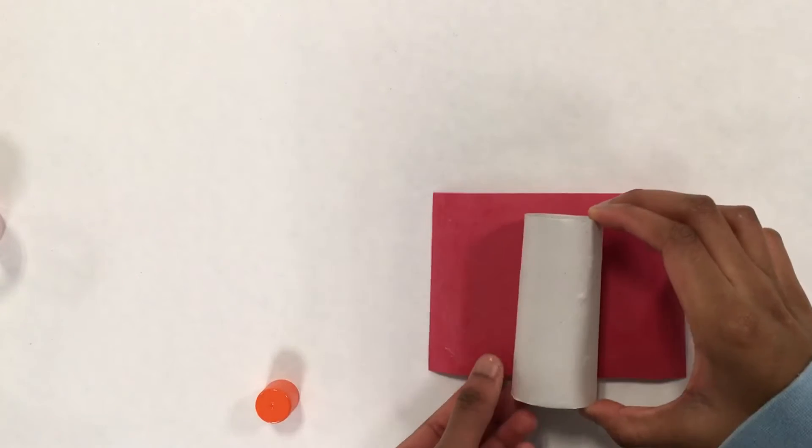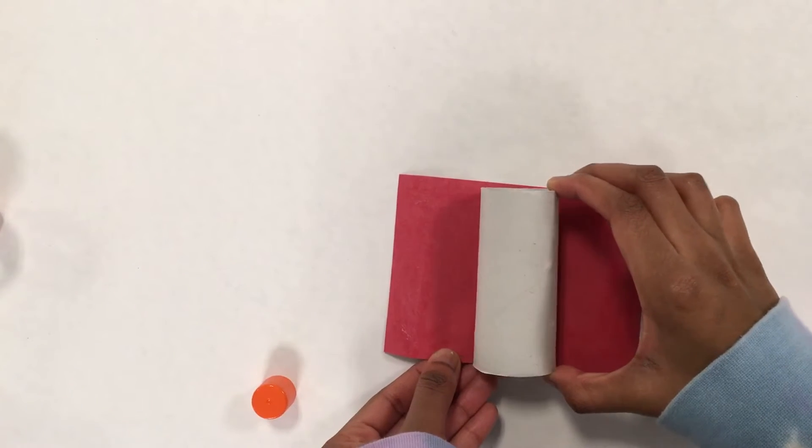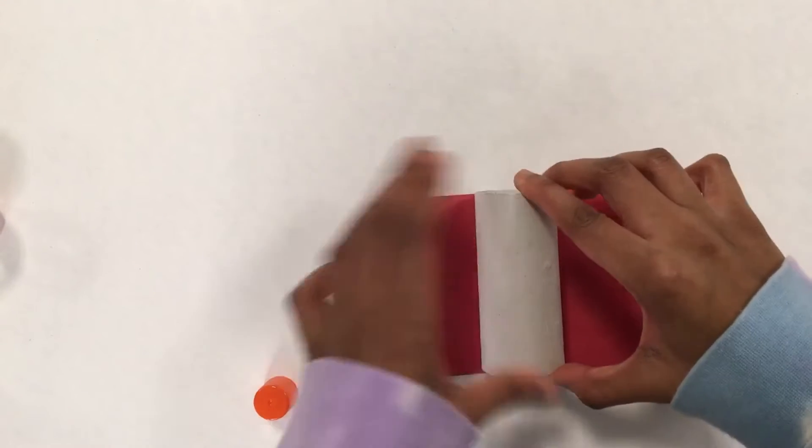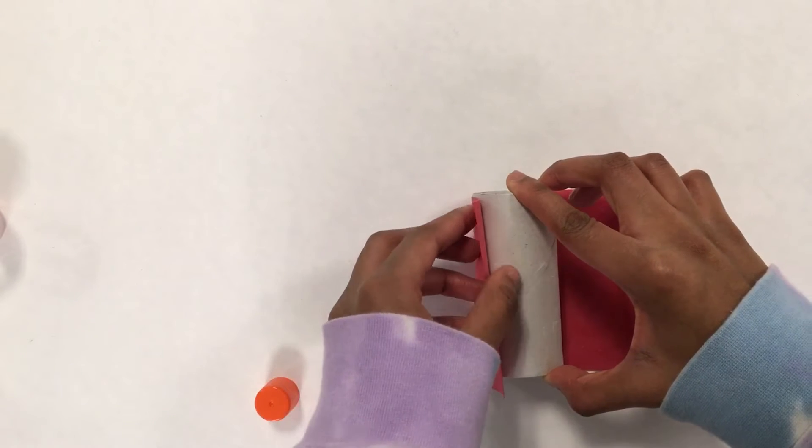And then we put the toilet paper roll right in the middle, and then we flip it over.